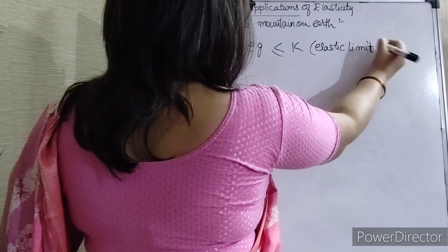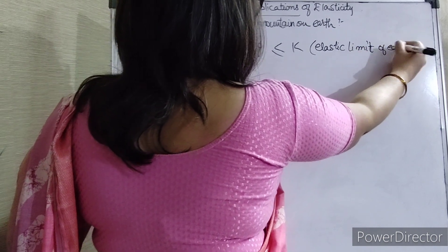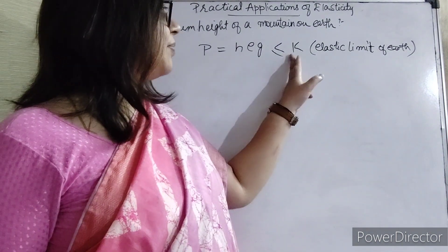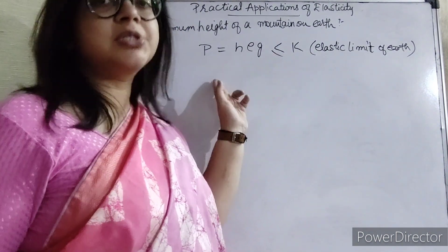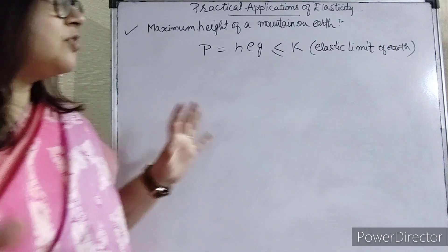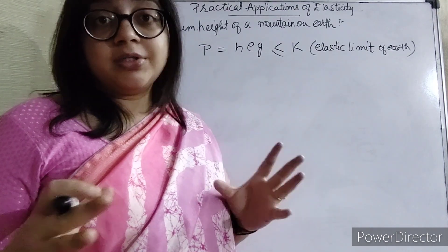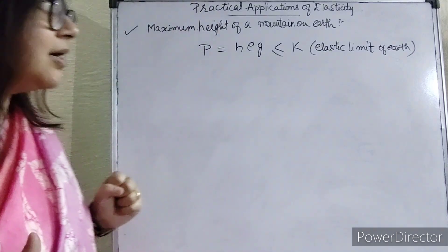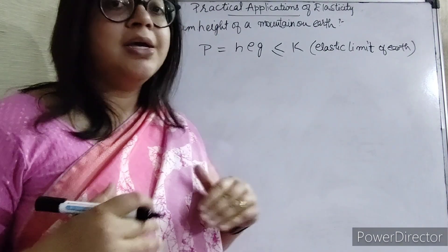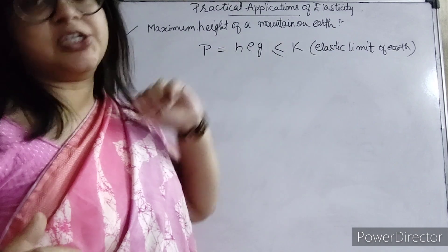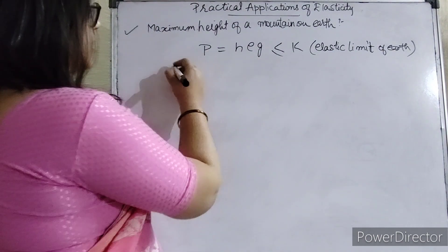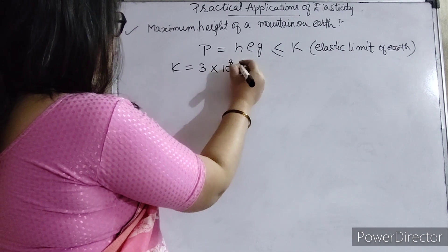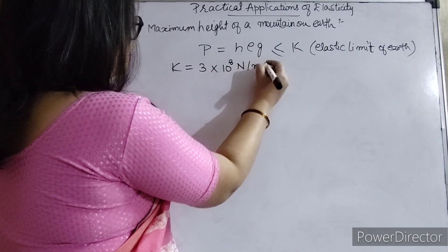So if there is pressure within this limit, then the earth will bear it. If the pressure becomes greater than k, then the earth will not be able to bear it. If it exceeds the elastic limit, the elasticity will be lost. The pressure must be less than or equal to this value in Newton per meter square.